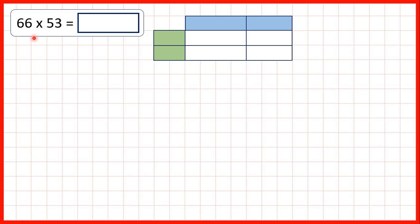The first thing to do is to partition both numbers into tens and ones. So with 66, we have 60 and 6, and with 53, we have 50 and 3. Now we can write our partitioned numbers down the side and top of the grid. It doesn't really matter which way round we write the numbers, but let's write 60 and 6 on the left, and 50 and 3 on top.